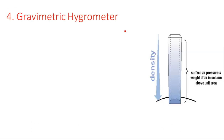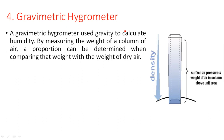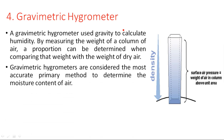The last type is the gravimetric hygrometer, which uses gravity to calculate humidity by measuring the weight of a column of air. Surface air pressure equals the weight of the air in the column above an area. It calculates the air weight with and without humidity, finds the difference, and gives the humidity content. Gravimetric hydrometers are considered the most accurate primary method to determine moisture content in the air.